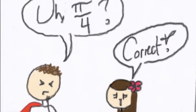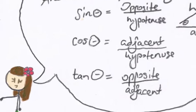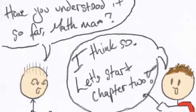And remember, in a right triangle, sine of an angle is equal to opposite over hypotenuse. Cosine of an angle is equal to adjacent over hypotenuse. And tangent angle is equal to opposite over adjacent. Thanks, Sokotoa. You're welcome. I'm off to solve more right triangles. Bye! Have you understood it so far, Mathman? I think so. Let's start Chapter 2.